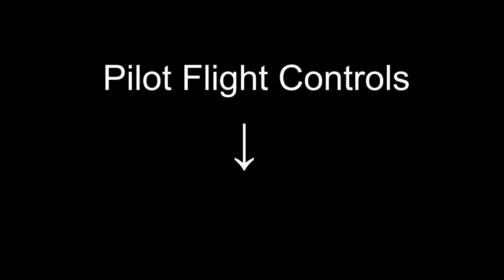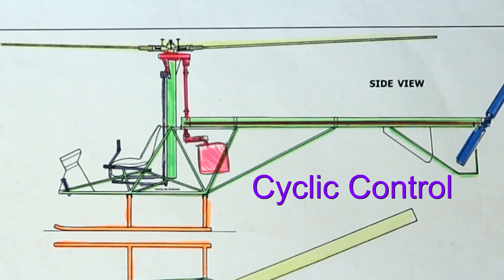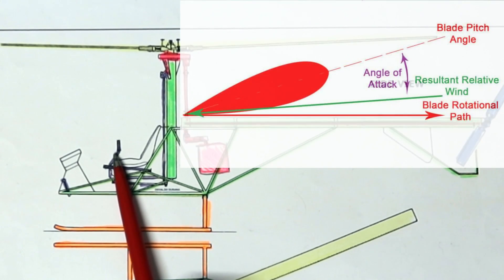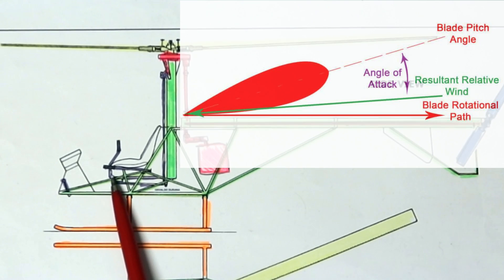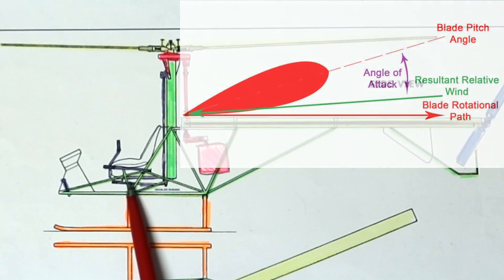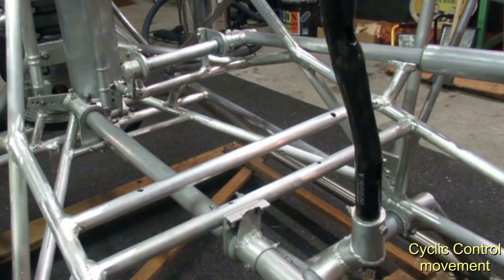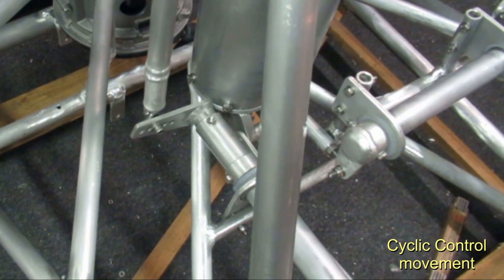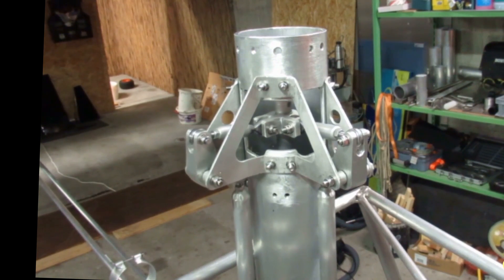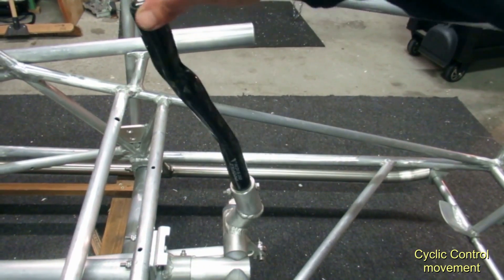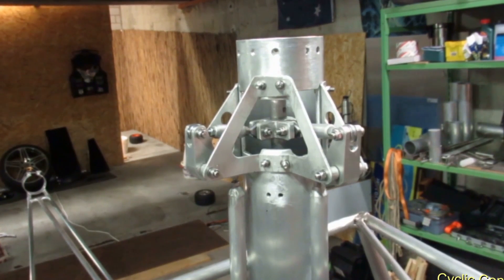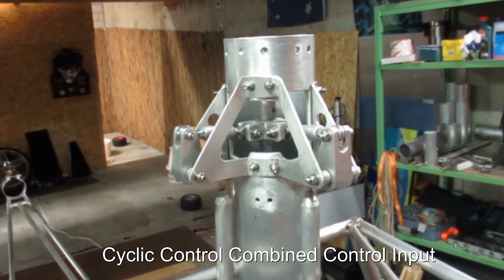Pilot flight controls. There are three basic types. The first one is called the cyclic control. This control changes the pitch angle of each main rotor blade independently according to its position in the blade rotating cycle, controlling the direction of movement of the helicopter: left-right control input, forward-aft control input, and combined control input.